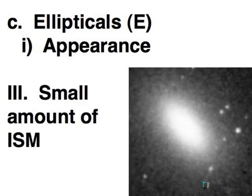And the reason why there's no new star formation is because of the small amount of interstellar medium, that is the gas and dust between the stars. There's very little gas and dust, so without any gas and dust, not much in the way of new star formation.